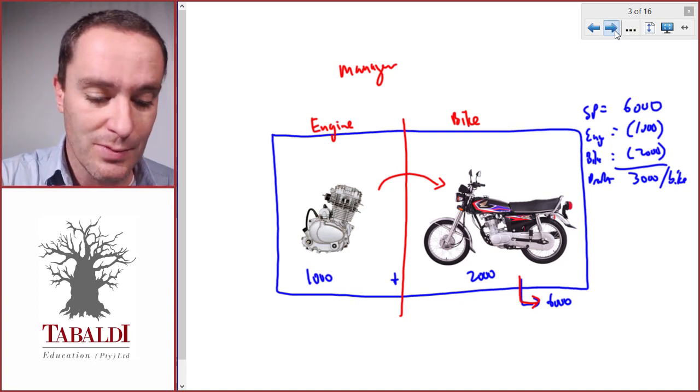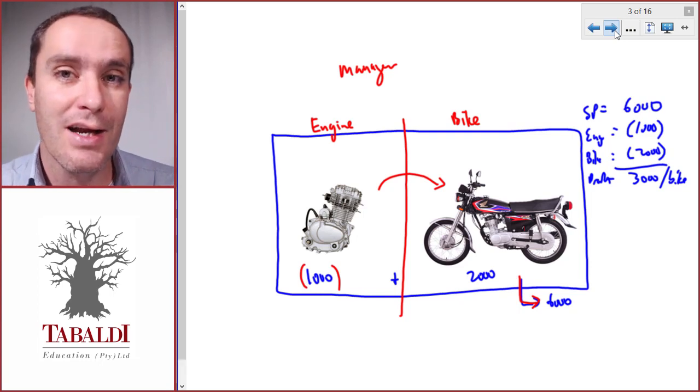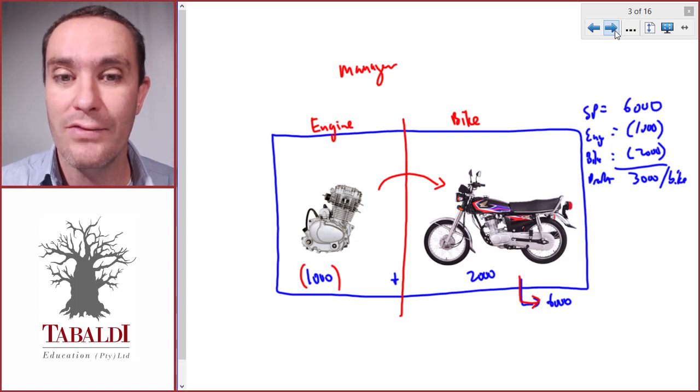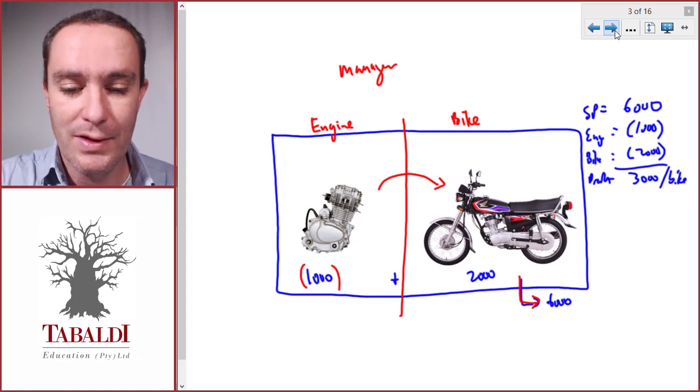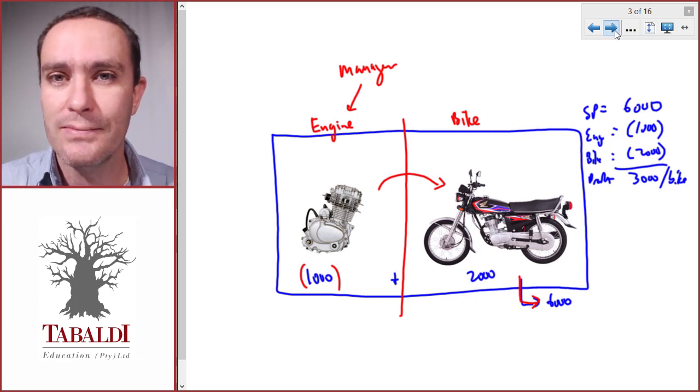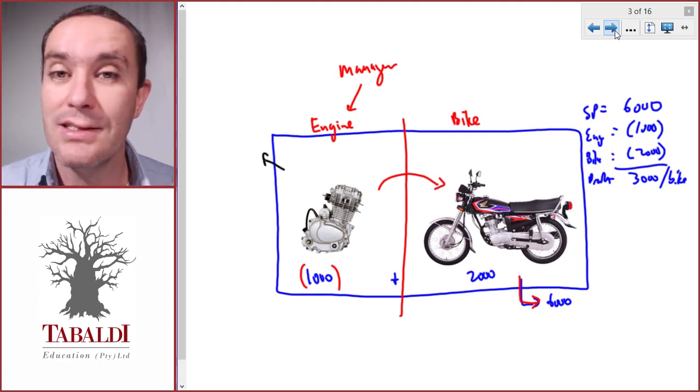In the engine division, the manager will be responsible for the cost—that's a thousand per unit—but they don't earn any revenue. They just transfer it within the company to another division. So the manager of the engine division will never be able to make a profit, and that will be very demotivating. There might even be the possibility of selling engines outside, and this manager would want to earn some income to improve his performance.